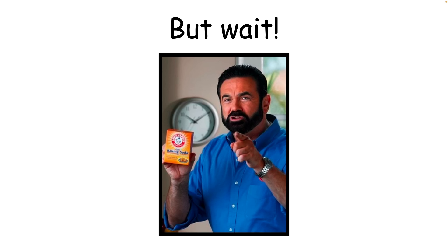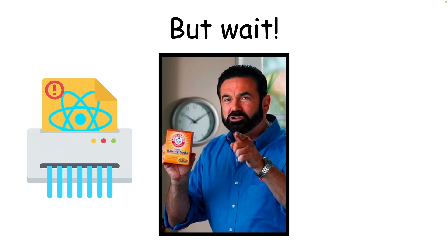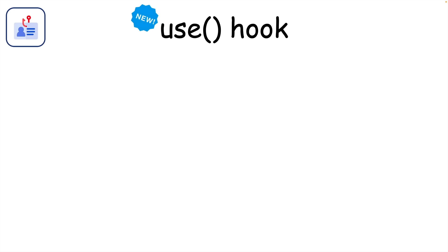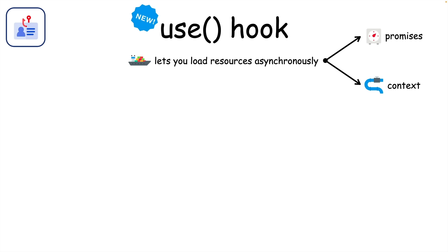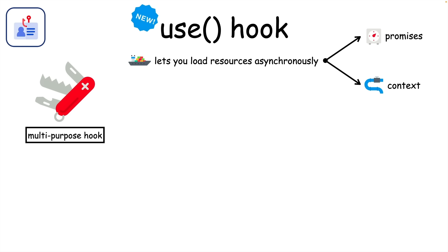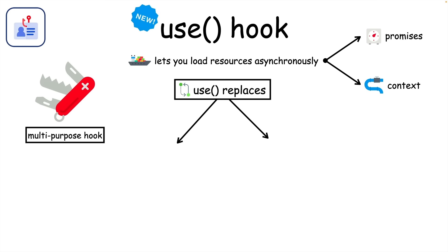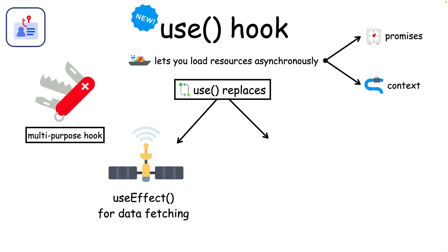But there's even more React code to remove. You can do that with the new use hook, which lets us load a number of different resources asynchronously. Use can resolve promises or context — it's a multipurpose hook, which means it can effectively replace two major hooks.